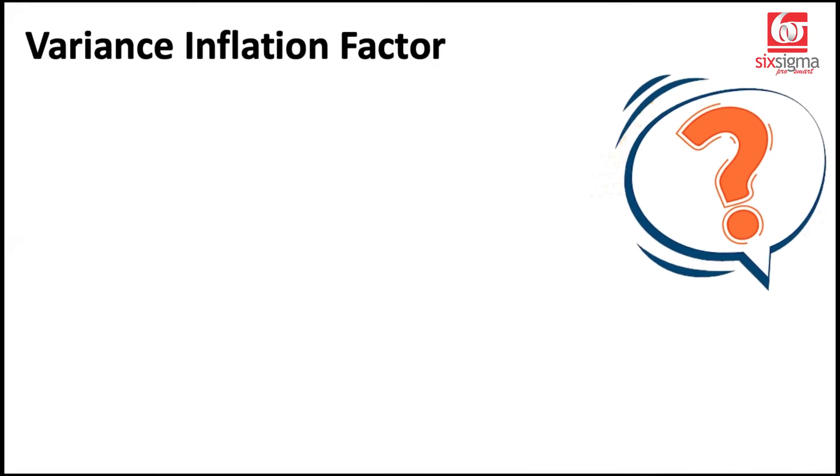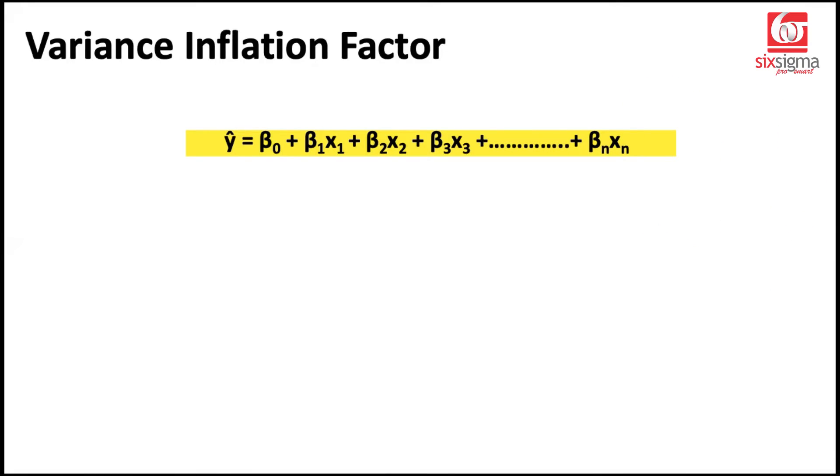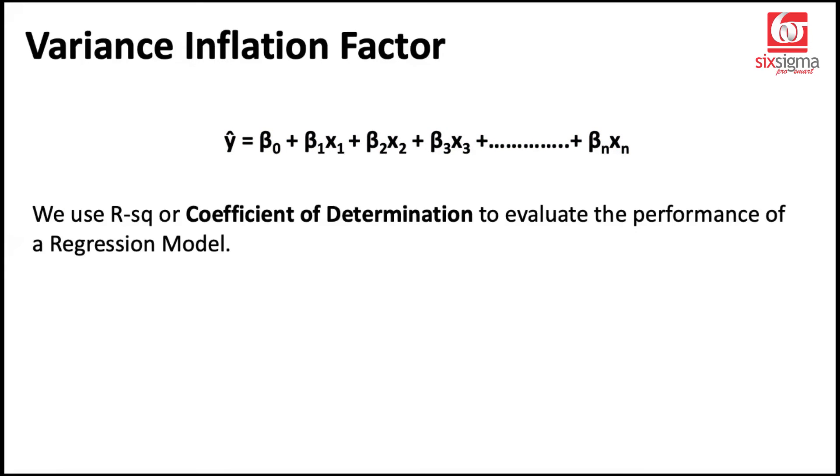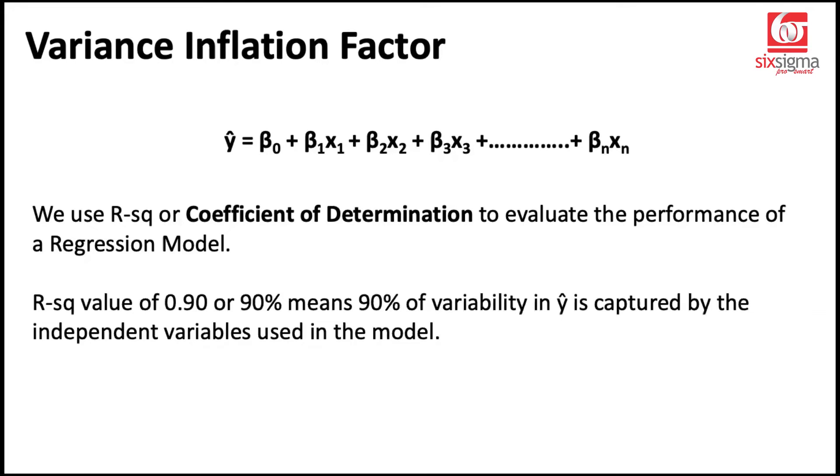What is variance inflation factor? To begin with, let's go back to our multiple linear regression equation, which we've already seen a couple of times. Now we know in order to evaluate a linear regression model, we use something called R-squared or the coefficient of determination. This was used to assess how good the model is. And the interpretation of coefficient of determination is something like this. So let's say if we get an R-squared value of 90%, it means that 90% of the variability in ŷ or the predicted values of target is captured by the independent variables that we have used in the model. It means we have a good model. The higher the value, the better it is. And this value always ranges between 0 to 1. 1 means 100%.